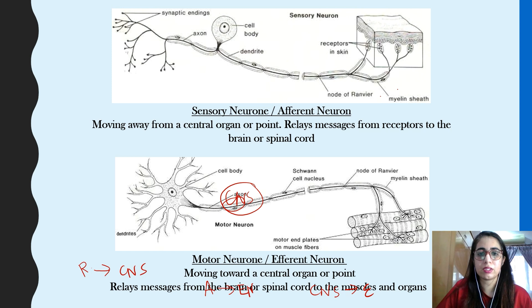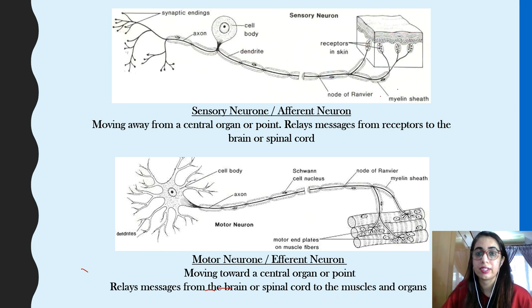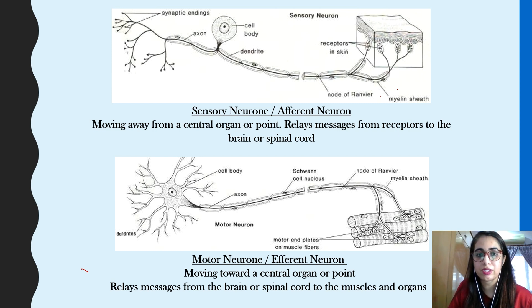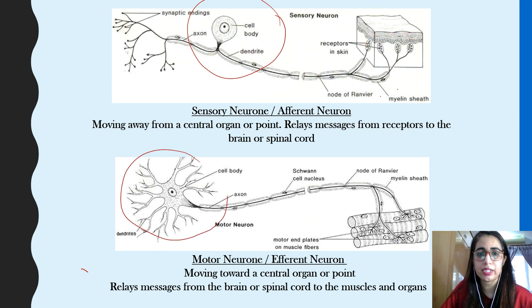The sensory (afferent) neuron relays messages from receptors to the brain or spinal cord — the CNS. The motor neuron relays messages from the brain or spinal cord to the muscles and organs. In the diagram, the sensory neuron has its cell body in the middle, between the myelin sheath, with the synaptic knob at one end. The efferent neuron has the cell body and dendrites at one end and the terminal at the other — so there is a structural difference between the two types of neurons.